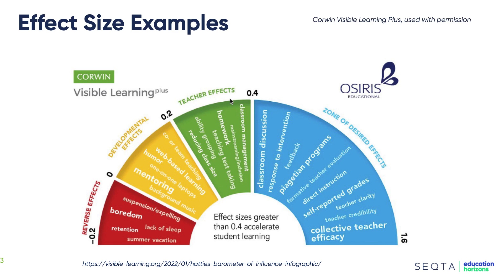If we now look at this barometer: 0 denotes that nothing's happening; the red zone denotes a negative impact — they're bored, have a lack of sleep, or have been on summer vacation; the yellow shows a small positive impact; the green area yields some positive impact; and the light blue influences are said to accelerate student achievement. Eventually that blue turns to dark blue, and these are the influences that considerably accelerate student achievement.